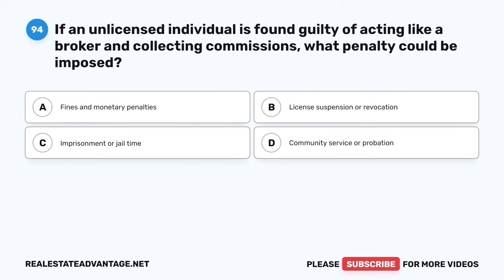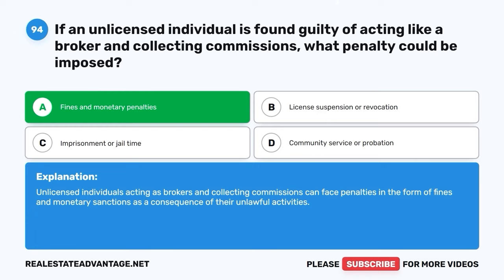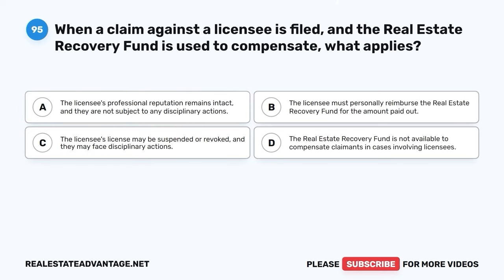Question 94. If an unlicensed individual is found guilty of acting like a broker and collecting commissions, what penalty could be imposed? A. Fines and monetary penalties. B. License suspension or revocation. C. Imprisonment or jail time. D. Community service or probation. The correct answer is A: Fines and monetary penalties. Unlicensed individuals acting as brokers and collecting commissions can face penalties in the form of fines and monetary sanctions as a consequence of their unlawful activities.